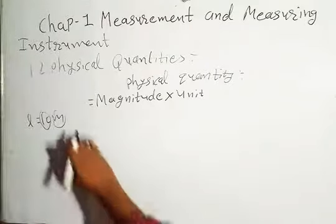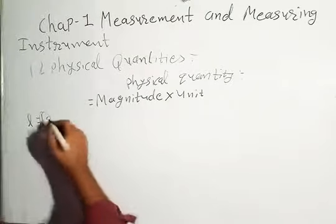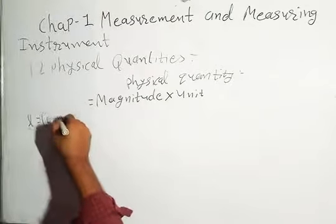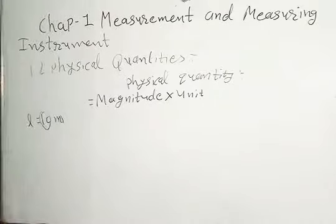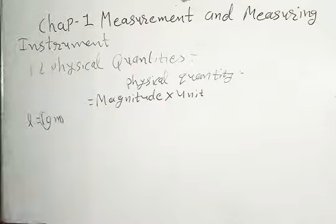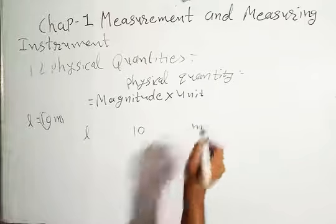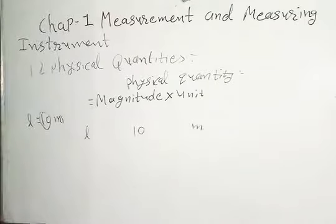If I only write 10, it is meaningless — what is 10? I have to write it along with the unit. If I say 10 meter, then it is clear. Without a unit, it could be centimeters or degrees Celsius — anything. So a number alone is meaningless; we must write it along with its unit. That combination is called a physical quantity.